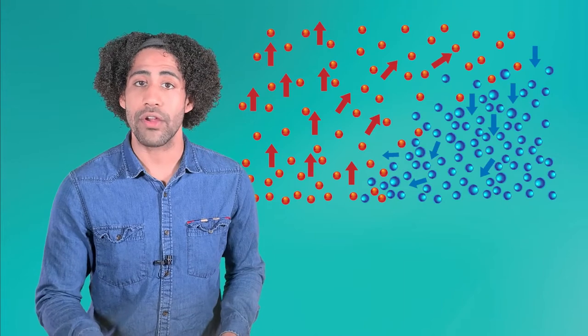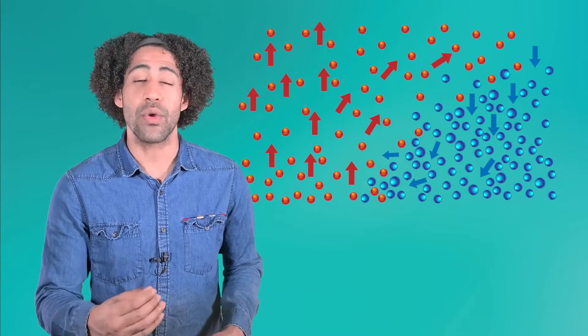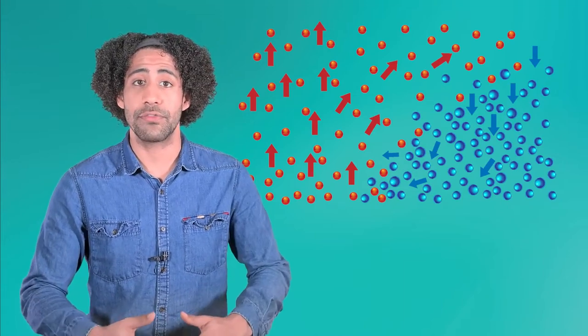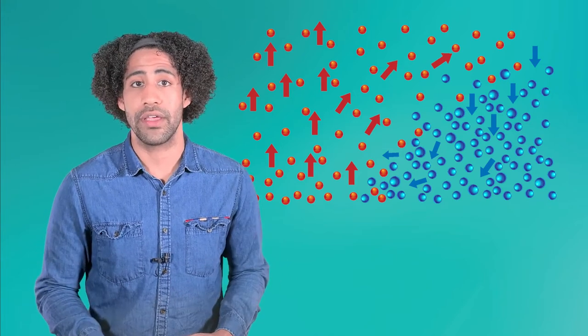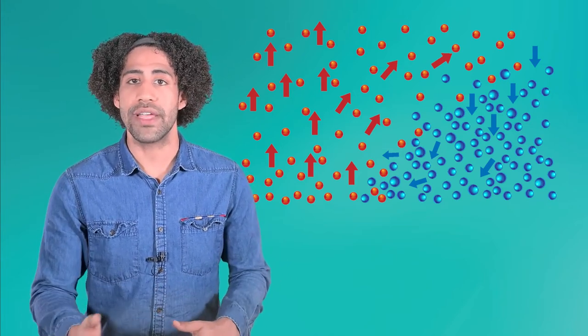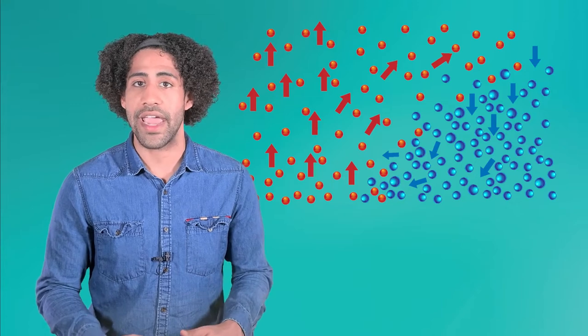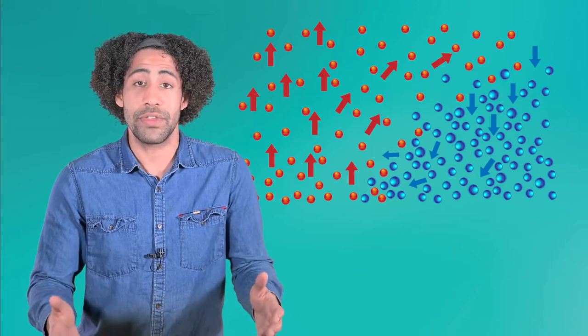Remember, when matter has more heat energy, its atoms start to move faster, and when they move faster, they spread apart. This makes warm air less dense than cool air, meaning warm air basically starts to float on top of cooler air. In other words, warm air rises and cold air sinks, and all that moving air is what we feel as wind.